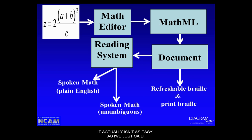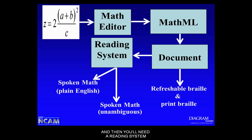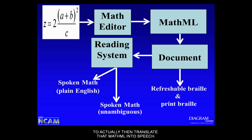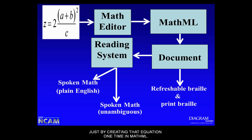It isn't as easy as it sounds — there are more steps involved. To create the MathML, you'll need a math editor, then the MathML needs to be put back into the original or final document. From that digital document, it can be turned into refreshable Braille or read by a text-to-speech or screen reader. But by using MathML, you get the widest variety of potential outcomes and can satisfy the largest number of students by creating that equation one time in MathML.